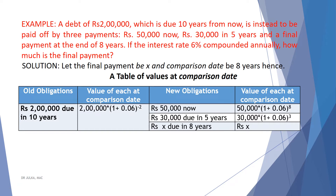In the case of new obligation, we paid Rs. 50,000 now, so value at comparison date is 50,000 into 1.06 raised to the power 8. Rs. 30,000 is due in 5 years and the comparison date is 8 years, so we will pay 3 years more interest. The value of this 30,000 is 30,000 multiplied by 1.06 raised to the power 3. And the value of Rs. x in 8 years is Rs. x.